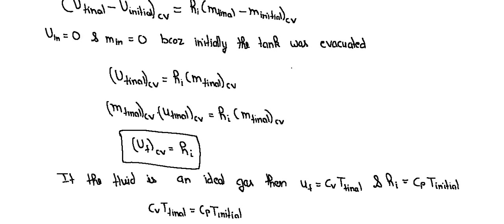From the definition of specific term, we will multiply m into u or h into u m final for control volume both side. It will cancel out both side and we will get u final for control volume equals h initial. In the given question, it is given that the fluid is an ideal gas.